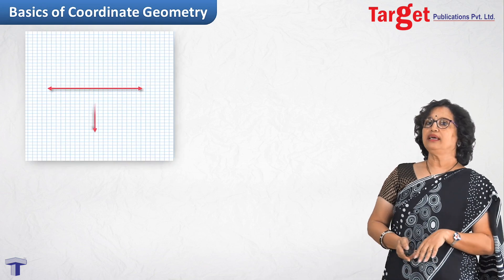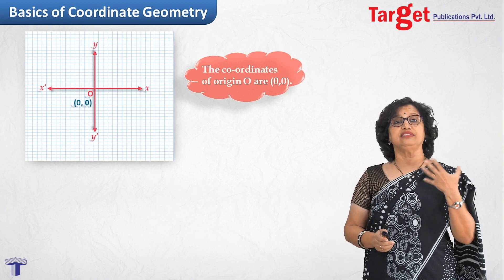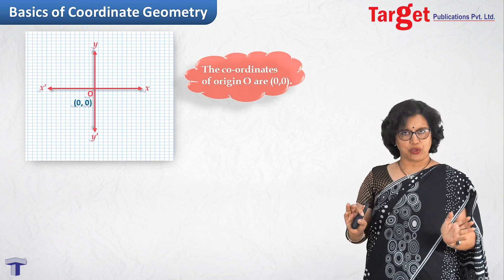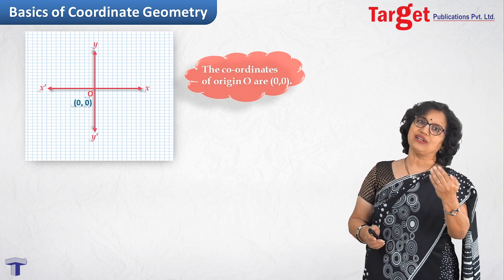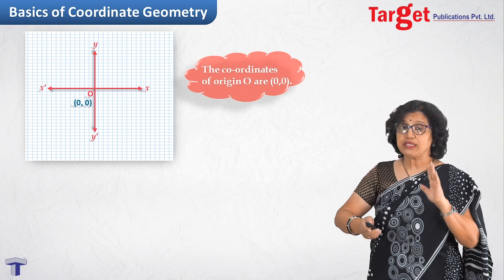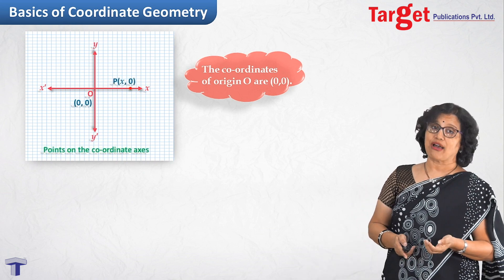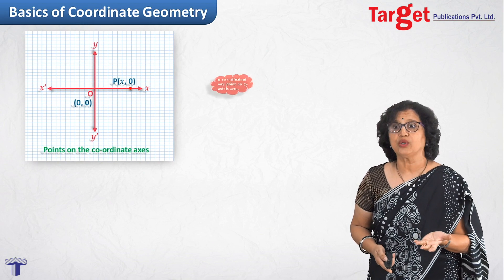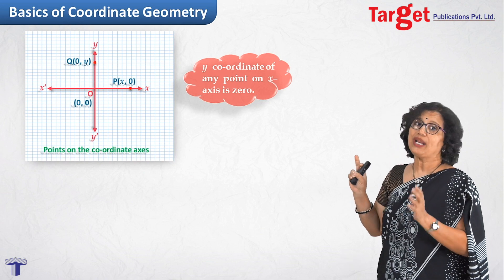Let us now look at some particular positions. The origin has coordinates (0, 0) because its distance from both axes is zero. A point on the X axis has its distance from the X axis equal to zero, so its Y coordinate is 0. A point on the Y axis has its distance from the Y axis equal to zero, so its X coordinate is 0.